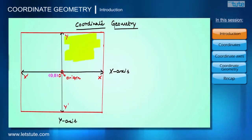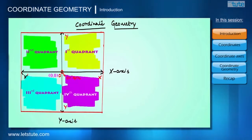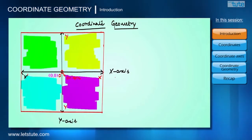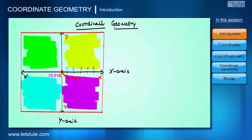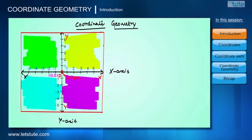The four parts are called the first quadrant, second quadrant, third quadrant, and fourth quadrant. The x-axis has positive values on the right side of the origin and negative values on the left side. Similarly, the y-axis has positive values above the origin and negative values below the origin.